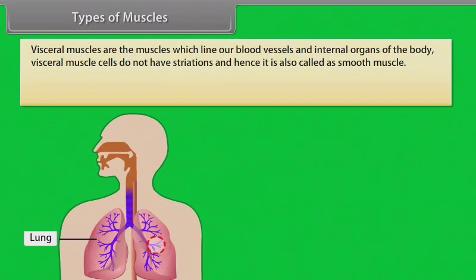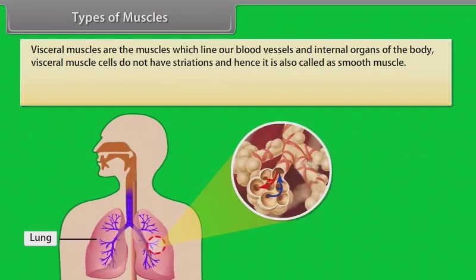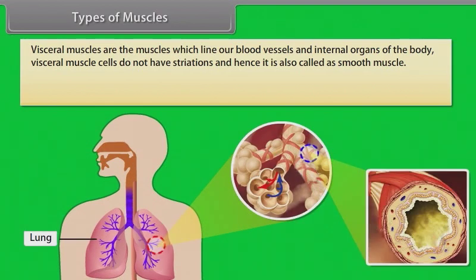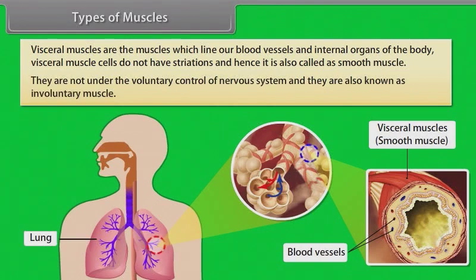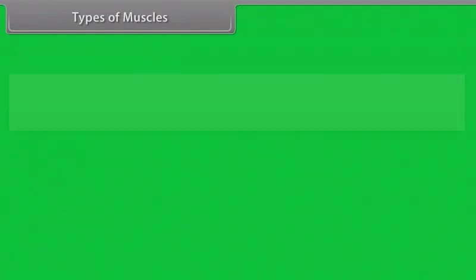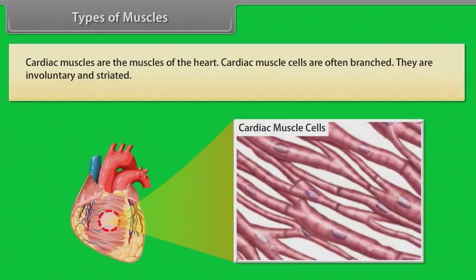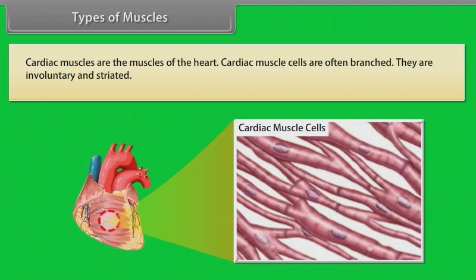Visceral muscles are the muscles which line our blood vessels and internal organs of the body. Visceral muscle cells do not have striations, and hence they are also called smooth muscle. They are not under the voluntary control of the nervous system and are also known as involuntary muscles. Cardiac muscles are the muscles of the heart; cardiac muscle cells are often branched, and they are involuntary and striated.